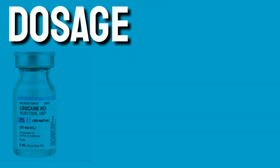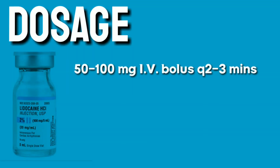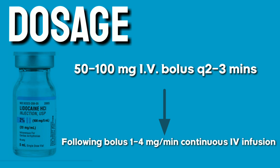Dosage: 50 to 100 mg IV bolus once over 2 to 3 minutes, followed by an infusion of 1 to 4 mg per minute.